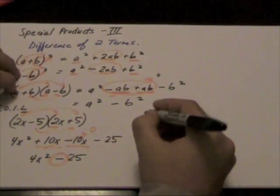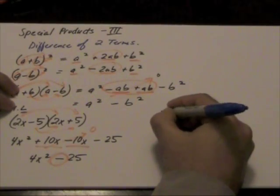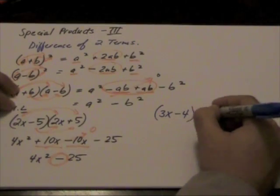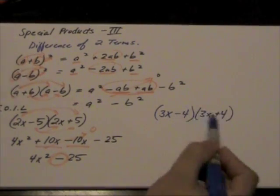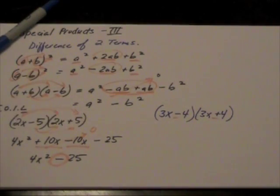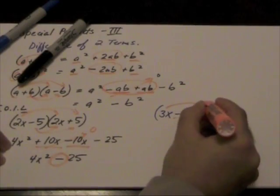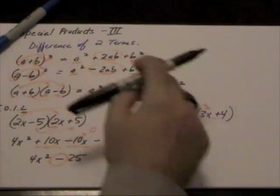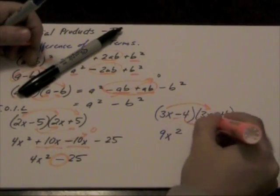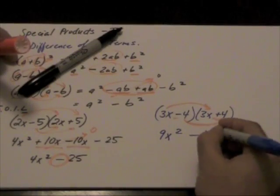So, let's look at another example. Over here, let's use a different color. So let's have 3x minus 4 times 3x plus 4. And remember, whenever we have a difference of two terms, one is always going to be negative, the other one is going to be positive. It doesn't matter which order they appear in. So, as we said, according to the FOIL rule, all we have to worry about is our first. So 3x times 3x will give me 9x squared. Then we worry about our last, negative 4 times positive 4 will give me negative 16.